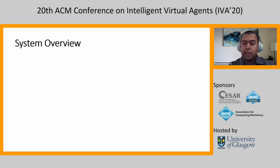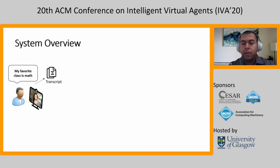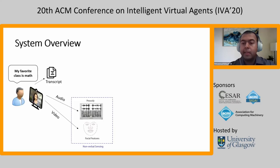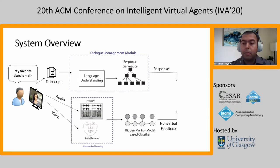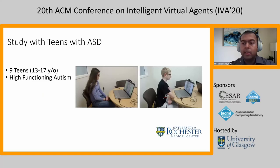This is how the automated system works. The human user can say something to Lisa — in this case, 'My favorite class is math.' The audio, video, and transcripts are then captured. The system then extracts the prosodic and facial features from audio and video. Using the hidden Markov model, we generate feedback. Using the transcript, we first match the keywords, and then we use the hierarchical dialogue manager to generate responses. So finally, Lisa would say, 'So we both are scientifically minded.'